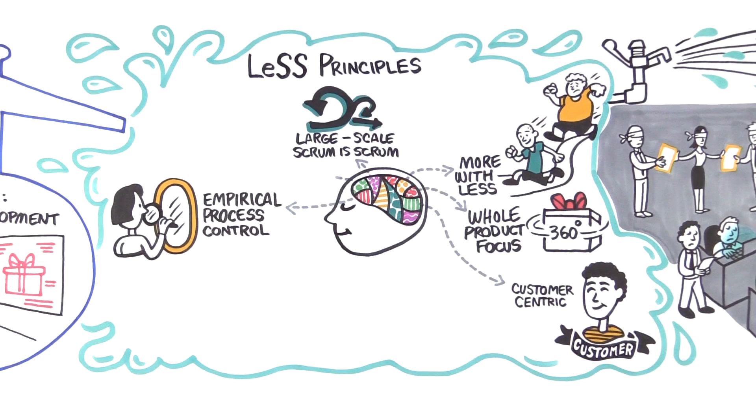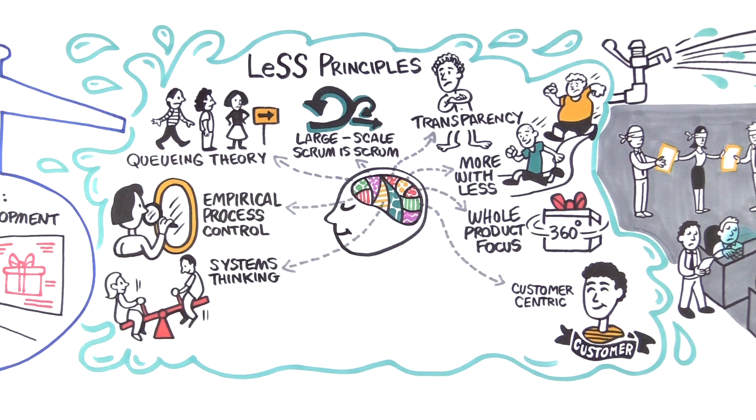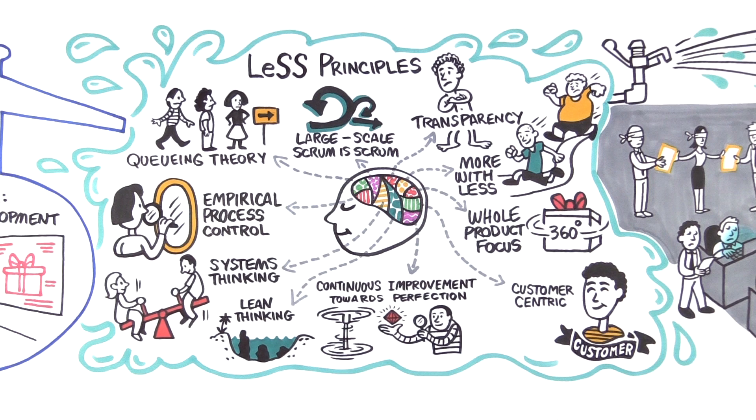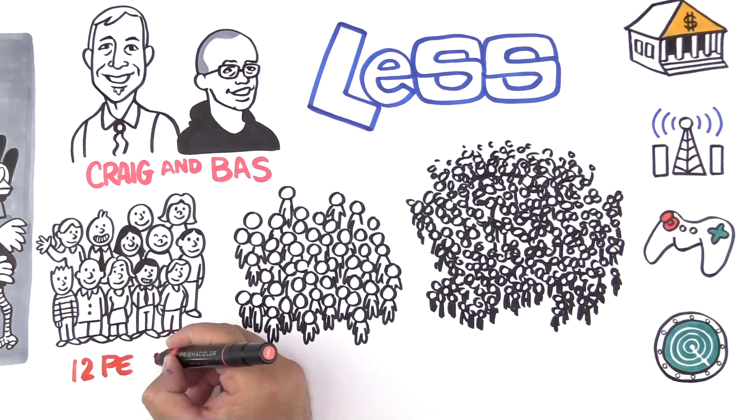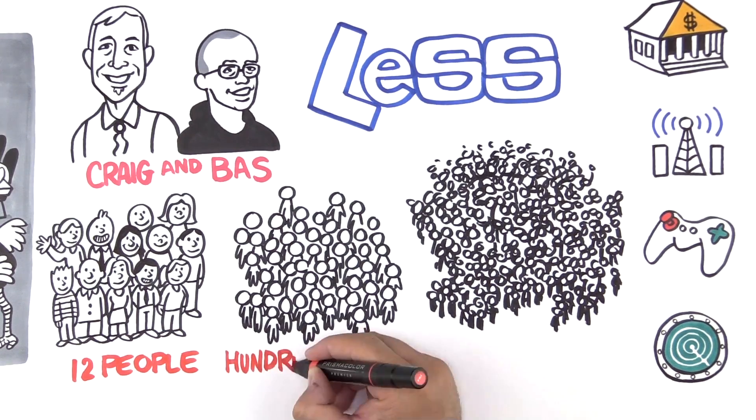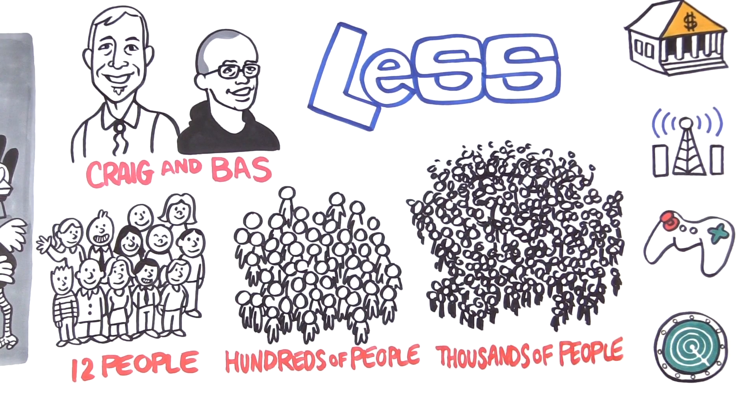It's led to hundreds of experiments and the formulation of LeSS. LeSS is a simple framework for scaling agile development. Using these principles and some others, LeSS has been used with groups of 12 people, hundreds of people, and thousands of people on products from banking to telecom, games to radar systems.